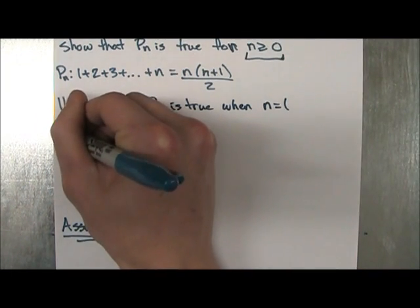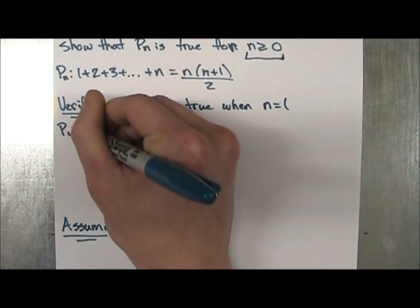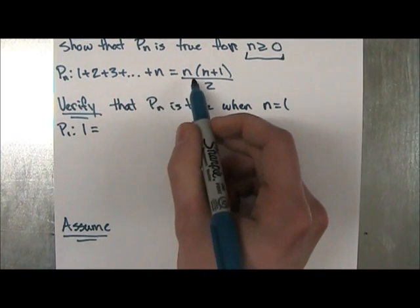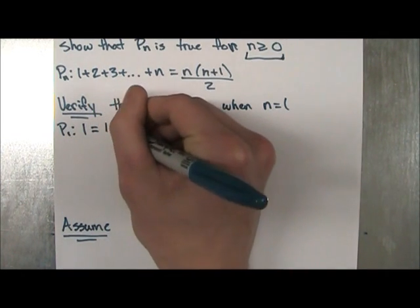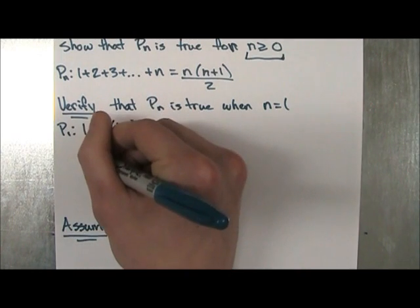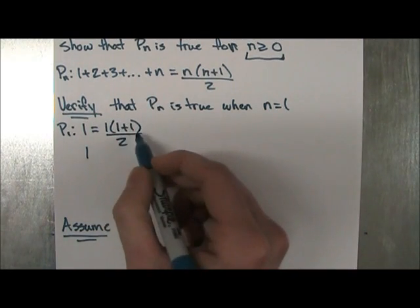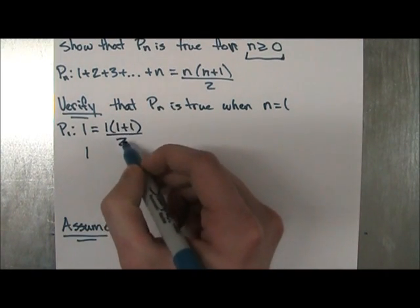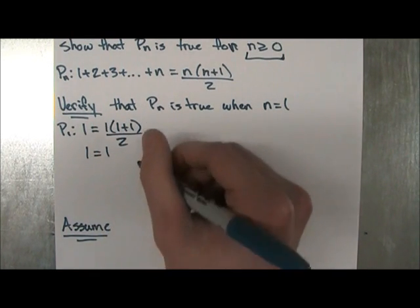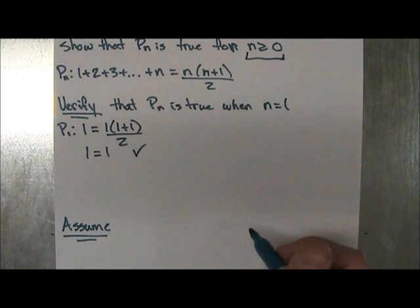So P1 is 1 equal to, and then you're just going to replace n with 1. So 1 times 1 plus 1 over 2. And you can see that 1, 1 plus 1 is 2 times 1 is 2 divided by 2 is 1. So the left hand side equals the right hand side, so this is true. We just verified if it was true.